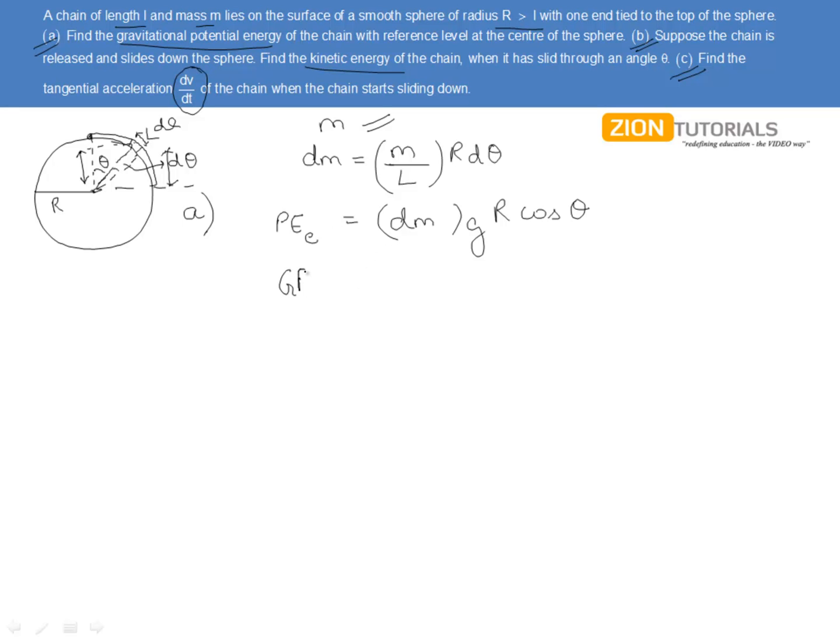Now, total gravitational potential energy can be simply found out by integrating it that is integrated Mg R square by L cos theta d theta from 0 to L by R. This L by R is because we have taken the length to be R. Let this total length subtends an angle phi. So, what the angle phi will be? Because if the total angle is phi, then we will be having R phi equal to capital L, so phi equal to L by R. So, that will be the limit, giving us the total gravitational potential energy to be M R square G by L sine L by R.